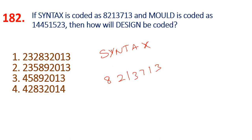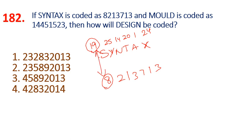S is the first number. S is 19, Y is 25, N is 14, T is 20, A is 1, X is 24. Now observe: 19 plus 8 is 27. The alphabet pair of Y: 25 plus 2 is 27. N: 14 plus 13 is 27. T: 20 plus 7 is 27.